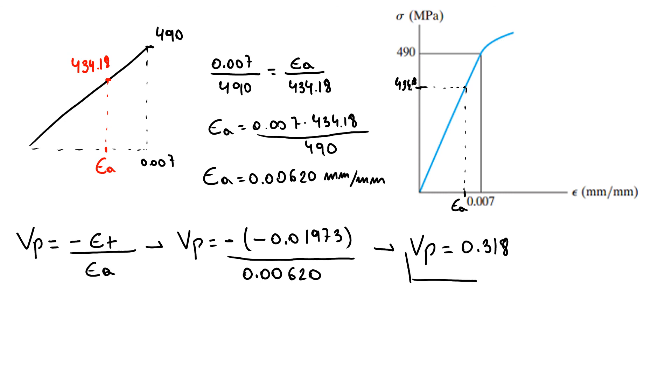So this is our Poisson's ratio, doesn't have units. So this was the last problem of homework 5.